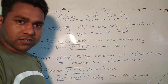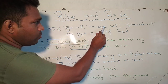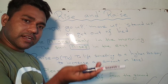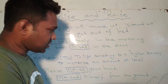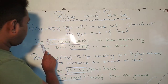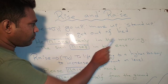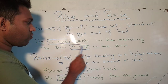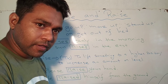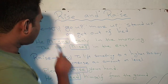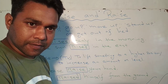So 'rise' — it is an intransitive verb. It means go up, move up, stand up, or get out of bed. Such as: 'He rises early in the morning,' or 'The sun rises in the east.' The word 'rise' cannot be followed by an object.